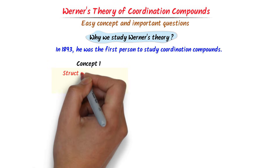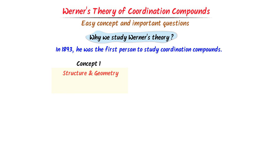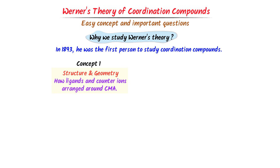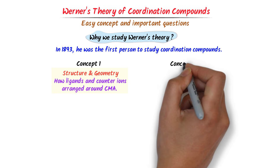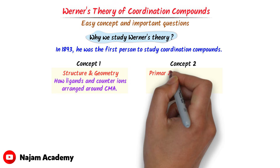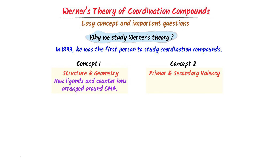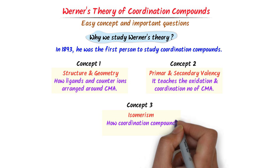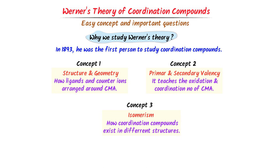Firstly, it explains the geometry of coordination compounds — that is, how ligands and counter ions are arranged around the central metal atom. Secondly, it explains the important concept of primary valency and secondary valency, meaning the oxidation number and coordination number of the central metal atom. Thirdly, it explains the important concept of isomerism — how coordination compounds exist in different forms with the same chemical formula. Thus, due to these three important concepts, we study Werner's theory.